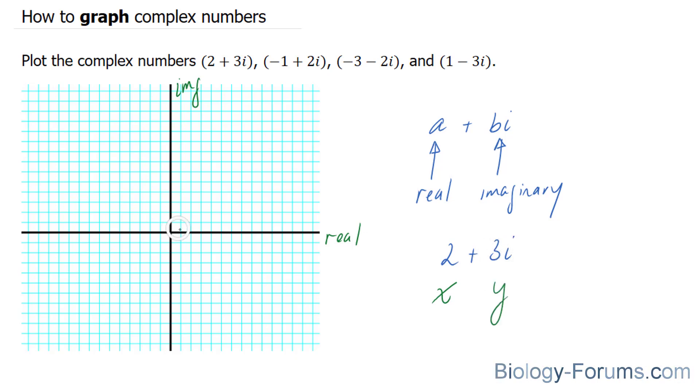So if each point designates one unit, you'd have to move two units to the right and three units up. So this point right here would be considered 2 plus 3i.